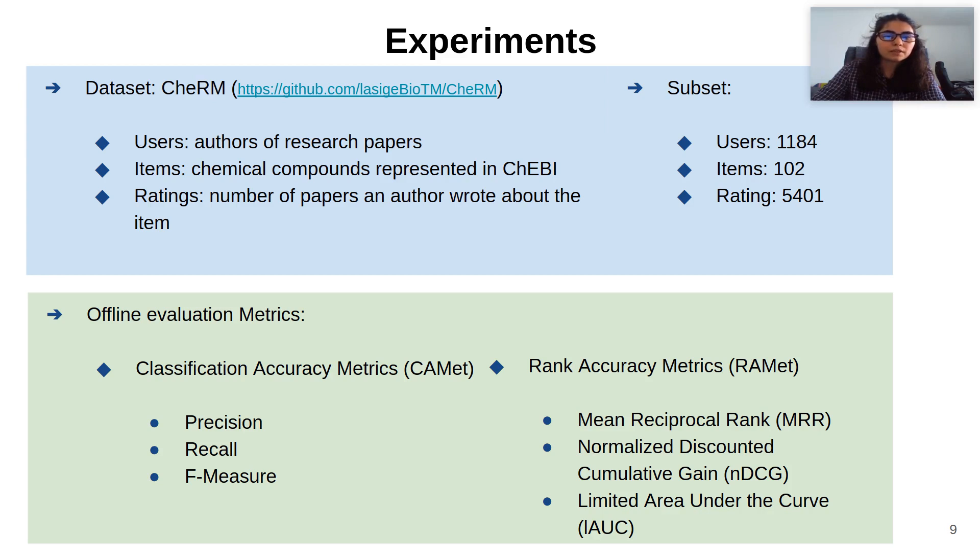We used a subset with approximately 1,000 users, 100 items, and 5,500 ratings. The evaluation of the algorithms was made offline, based on classification accuracy metrics such as precision, recall, and F-measure, which allow us to evaluate the relevant and irrelevant items recommended in a list.